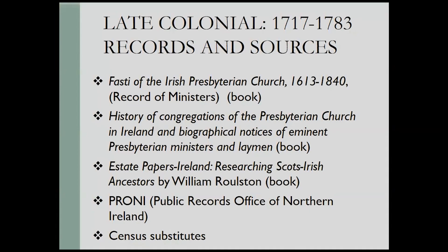If your ancestors were not Catholic or Anglican but Presbyterian, there is a good book on the Presbyterian Church that gives information on where to look for records and what you might find. There's also an interesting book on researching your Scots-Irish ancestors — if your ancestors came from the north, were previously Scottish, moved to Ireland, stayed for a couple of generations, and then immigrated to the US. The Public Record Office of Northern Ireland would be another resource. Census substitutes would be another thing to consider, along with land records and church records, since a lot of census records during these early time periods were lost.